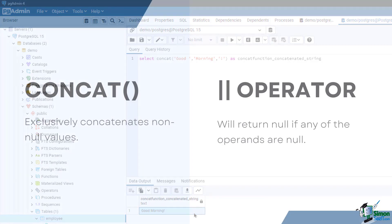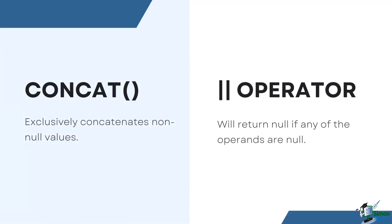Keep in mind that the CONCAT function and the pipe operator have different approaches to handling null values. While the CONCAT function exclusively concatenates non-null values, the pipe operator will return null if any of the operands are null.